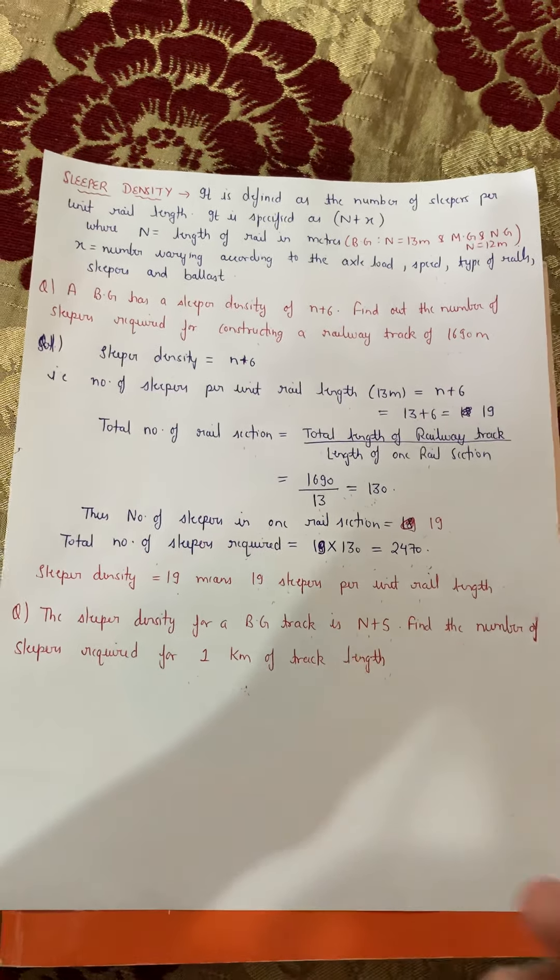Now I am giving you another question. The question is: sleeper density for a broad gauge track is n plus 5 — find out the number of sleepers required for 1 kilometer of track length. You all have to solve this question and post the answer on the WhatsApp group.